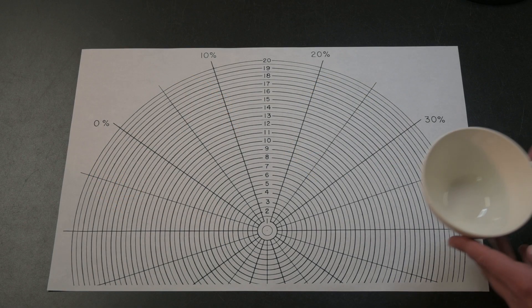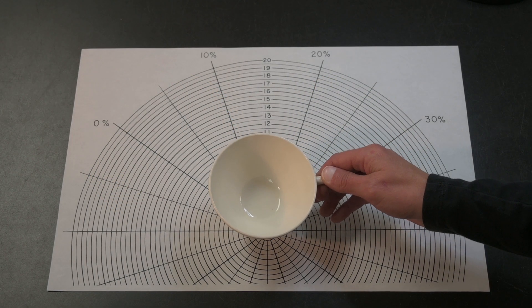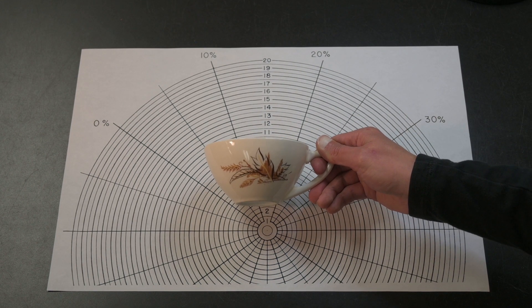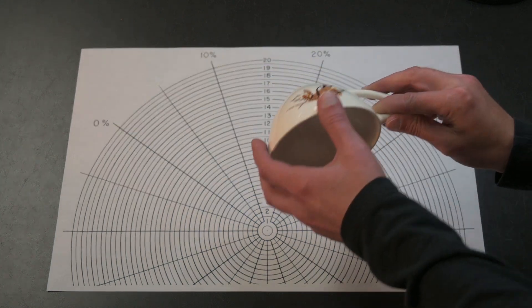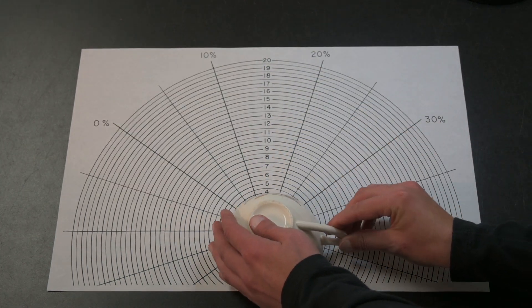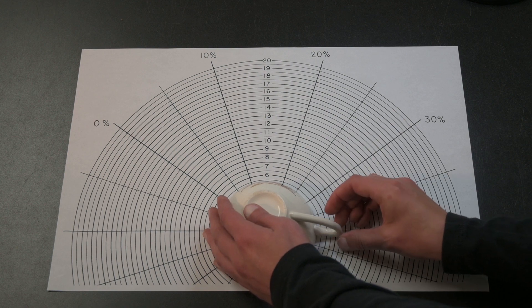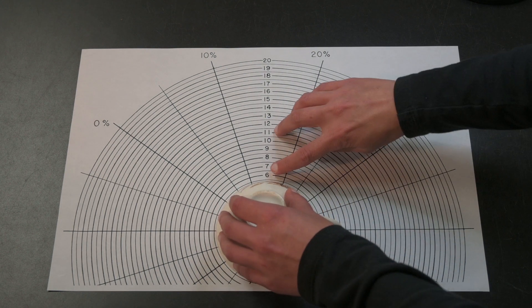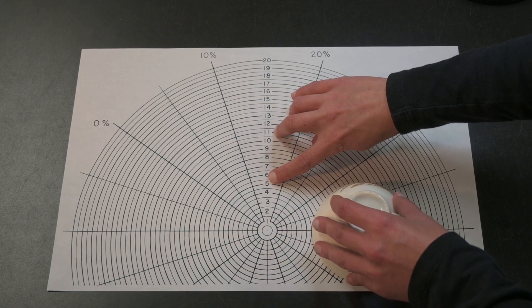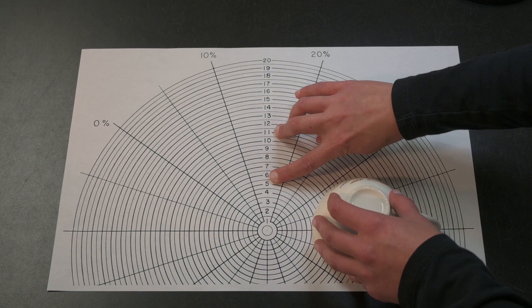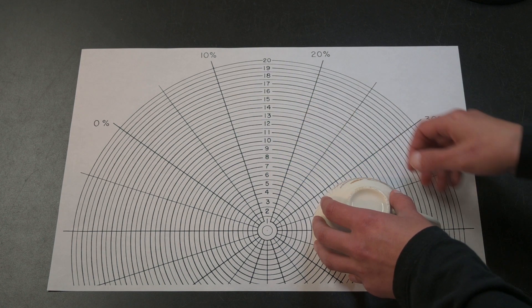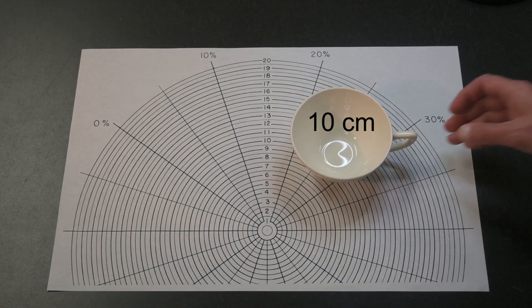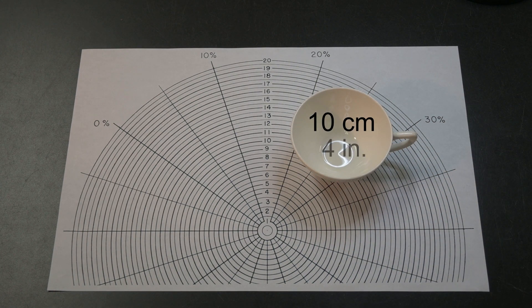The process is straightforward with a complete or nearly complete rim, such as the one on this teacup. When we line it up with its center at the center of the rings, we get a radius of five centimeters. Multiplying by two for the diameter gives us a diameter of ten centimeters, or just under four inches.